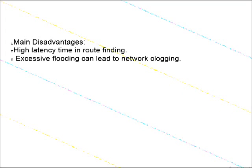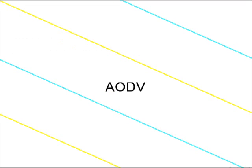Disadvantages are high latency time in route finding, and excessive flooding can lead to network clogging. And AODV...